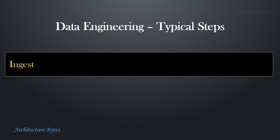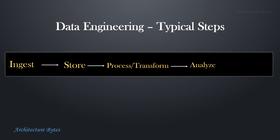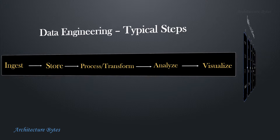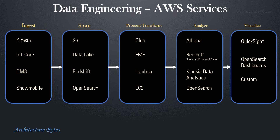The typical steps for data engineering are to ingest, store, process or transform, analyze, and then visualize data. Here are some AWS services that are used for data engineering. Let's learn more about them.